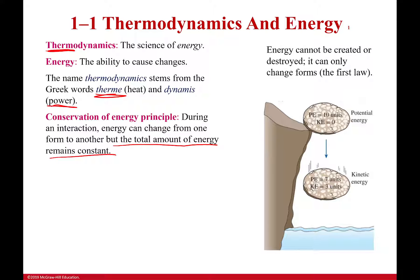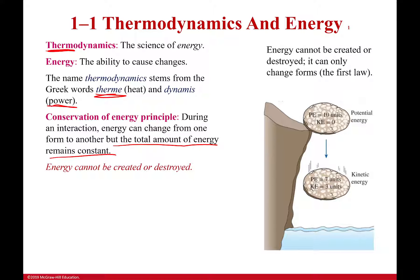Energy is not destroyed. Now, if you're thinking about E equals MC squared — yes, energy can go to mass and mass can go to energy, but that's outside the realm of this course, so we're not going to worry about that. If you're going nuclear, that's important; for here, not so much. Energy can't be destroyed — it just goes from one form to another. As we'll learn later, that form is not always useful, but it goes from one form to another.